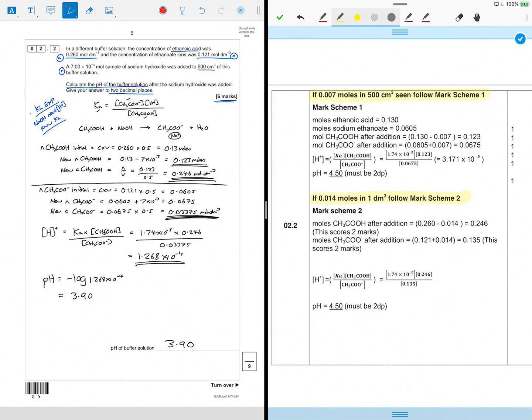Both of the answers are 4.5 here, so what's going on? Moles of ethanoic acid 0.13, moles of sodium ethanoate 0.0605. Moles of CH after addition 0.123, yeah I've got that, and 0.0675, yes I've got that. So that's two marks so far, then rearrangement.